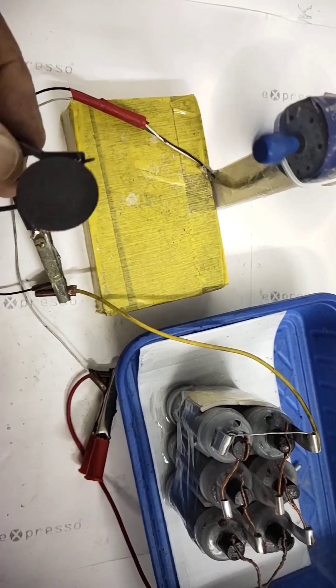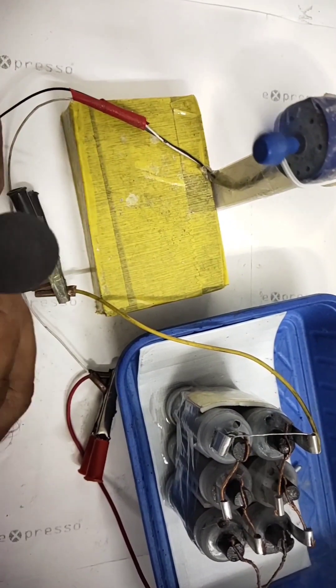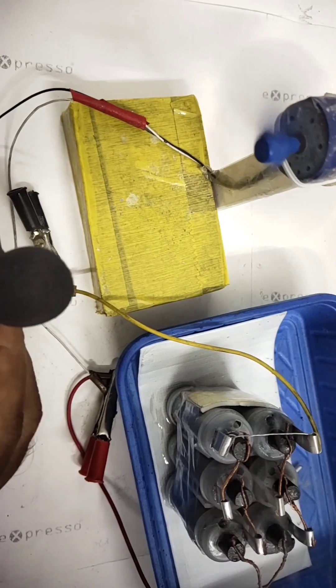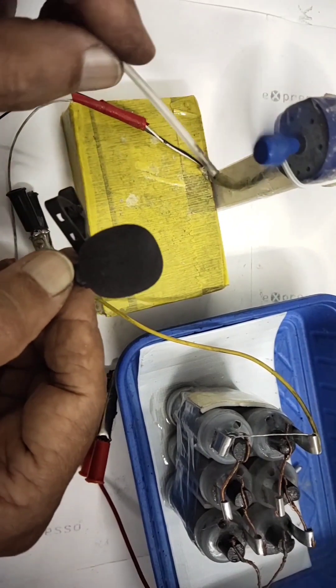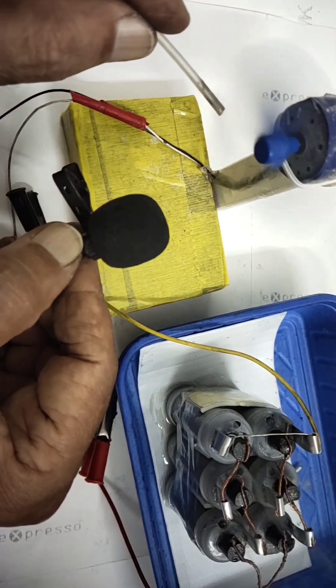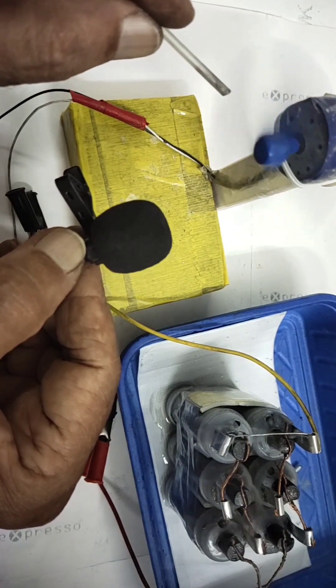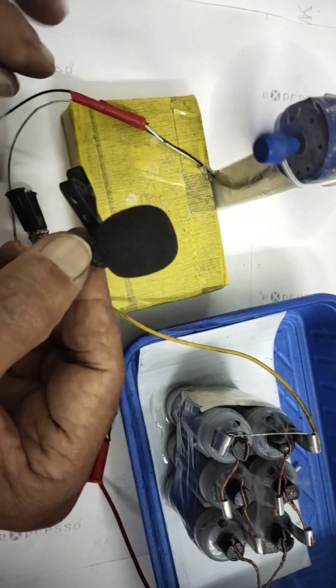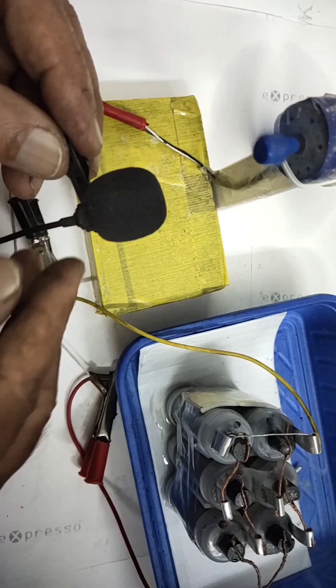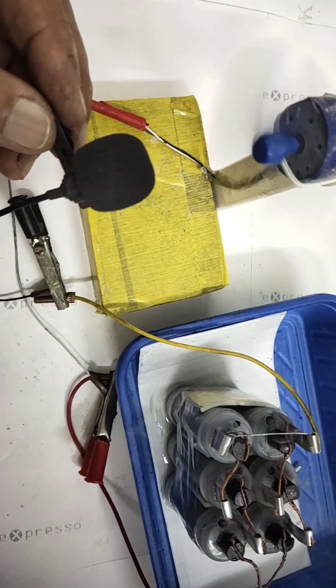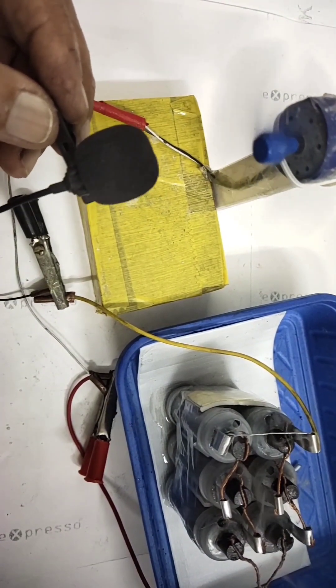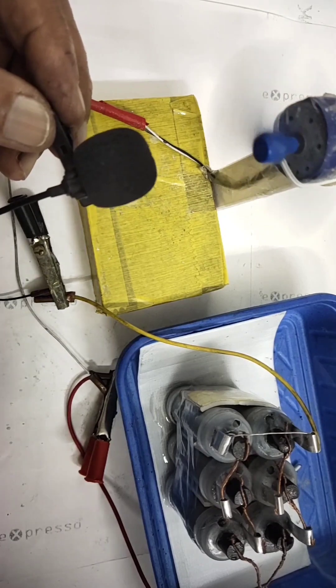You can see the voltage and the fan running so fine. This aluminum air battery with 3 cells in series gives you nearly 3.5 volts and amperes is more than 300 to 400 milliampere.